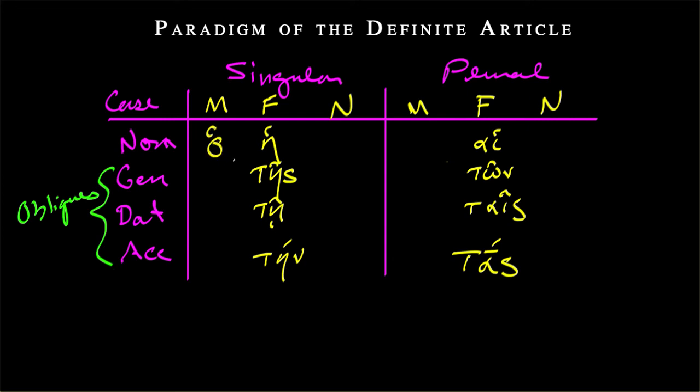So again, we have not a vowel with a rough breathing and no accent, proclitic. Then we have tou, diphthong omicron upsilon. In the dative, we have tō with an omega and an iota subscript, and again keeping that circumflex.